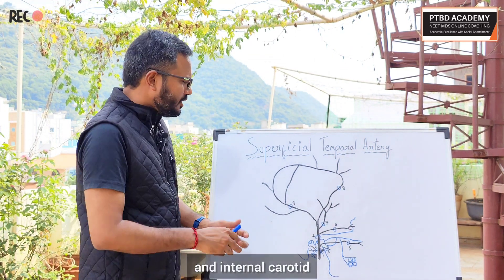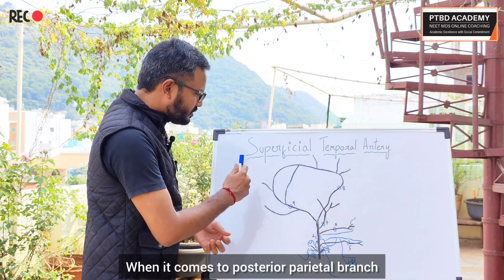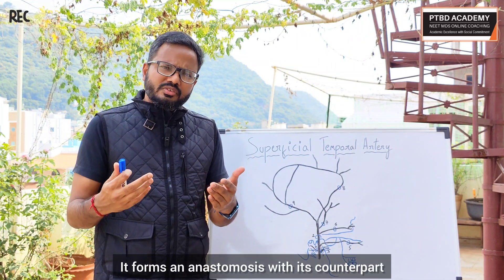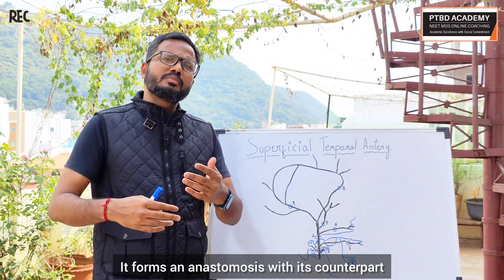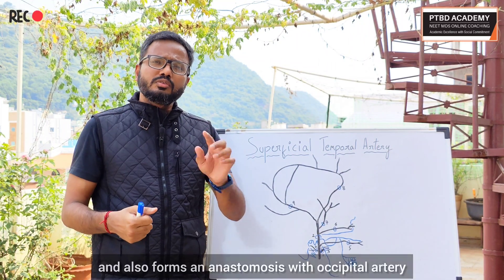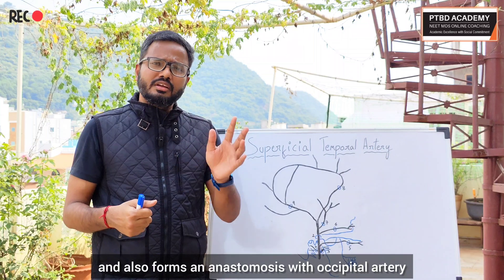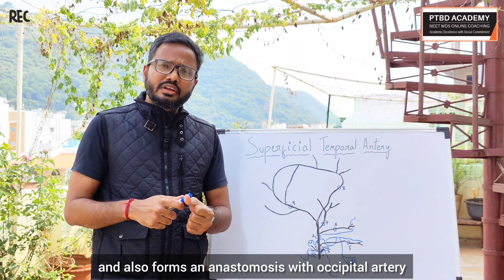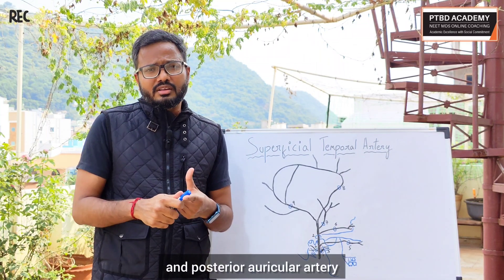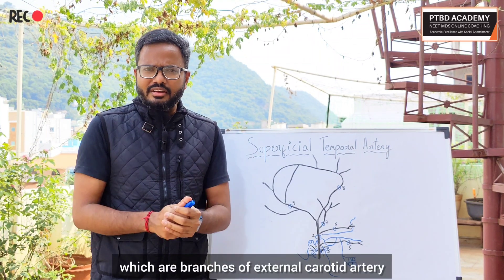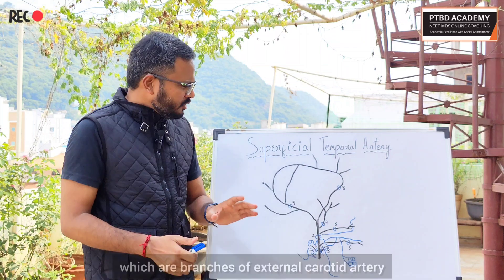So here, interestingly and very importantly, you find a communication between the branches of the external carotid and the internal carotid. When it comes to the posterior parietal branch, it forms an anastomosis with its counterpart from the opposite side and also with the occipital artery and posterior auricular artery, which are branches of the external carotid artery.